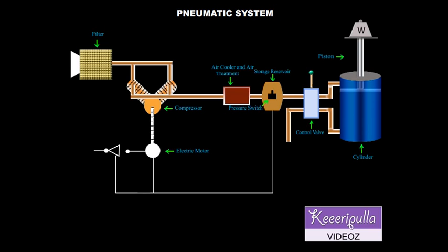Now we shall discuss the working of a pneumatic circuit. Atmospheric air is drawn through the air filter and raised to the required pressure by the air compressor. The air is then cooled in the air cooler and stored in the reservoir.